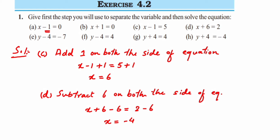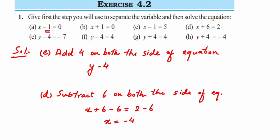Part (e): y minus 4 is equal to minus 7. Since minus 4 is given, we should add 4 so that minus 4 plus 4 becomes 0. Adding 4 on both sides: y minus 4 plus 4 is equal to minus 7 plus 4. Since they have opposite signs, we subtract: 7 minus 4 is 3, and since 7 is the greater number with a minus sign, y is equal to minus 3.